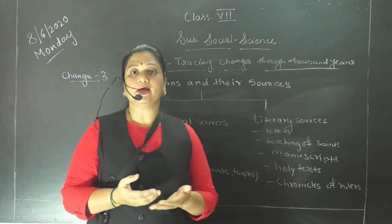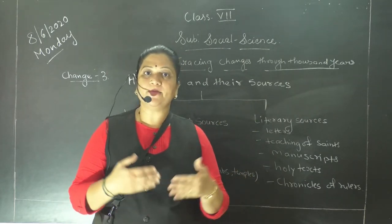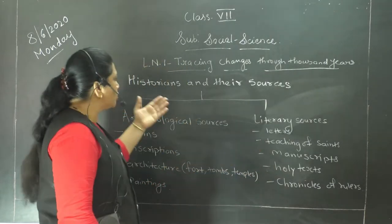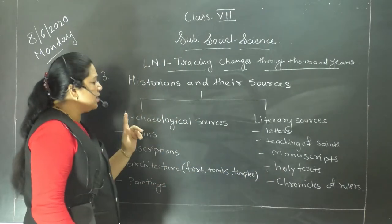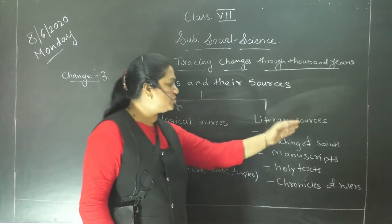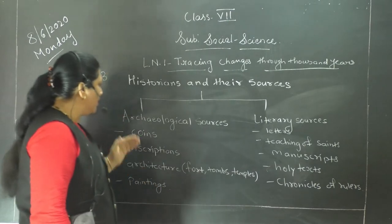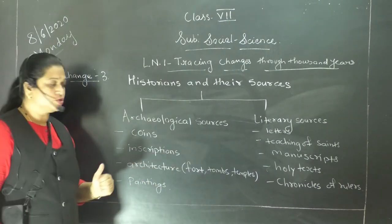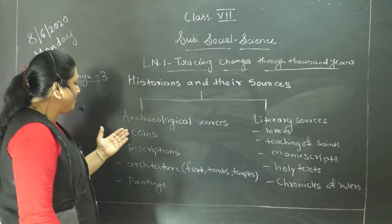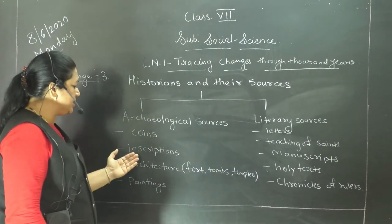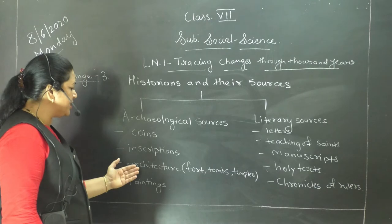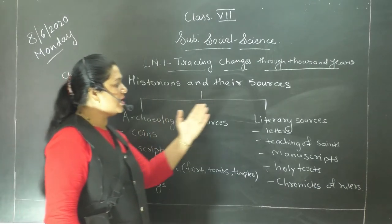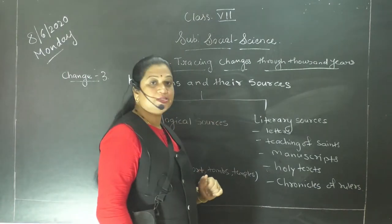How do we come to know about the Medieval period? The sources were archaeological sources and literary sources. Archaeological sources include coins, inscriptions, literature, and paintings. Literary sources include letters, teachings of saints, manuscripts, holy texts, and chronicles of rulers.